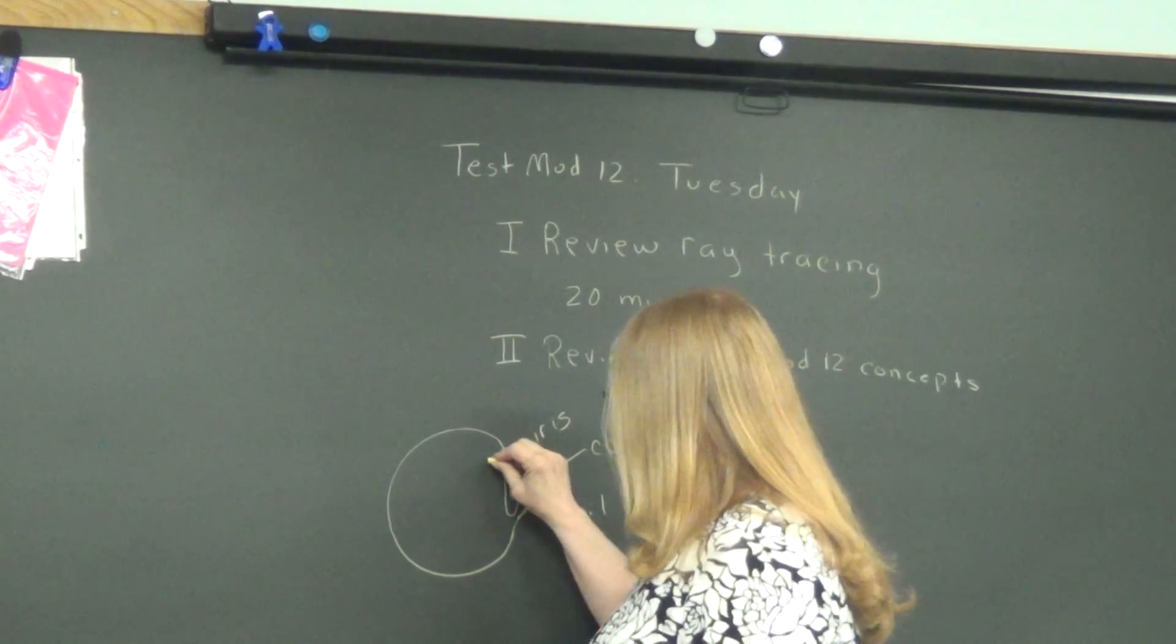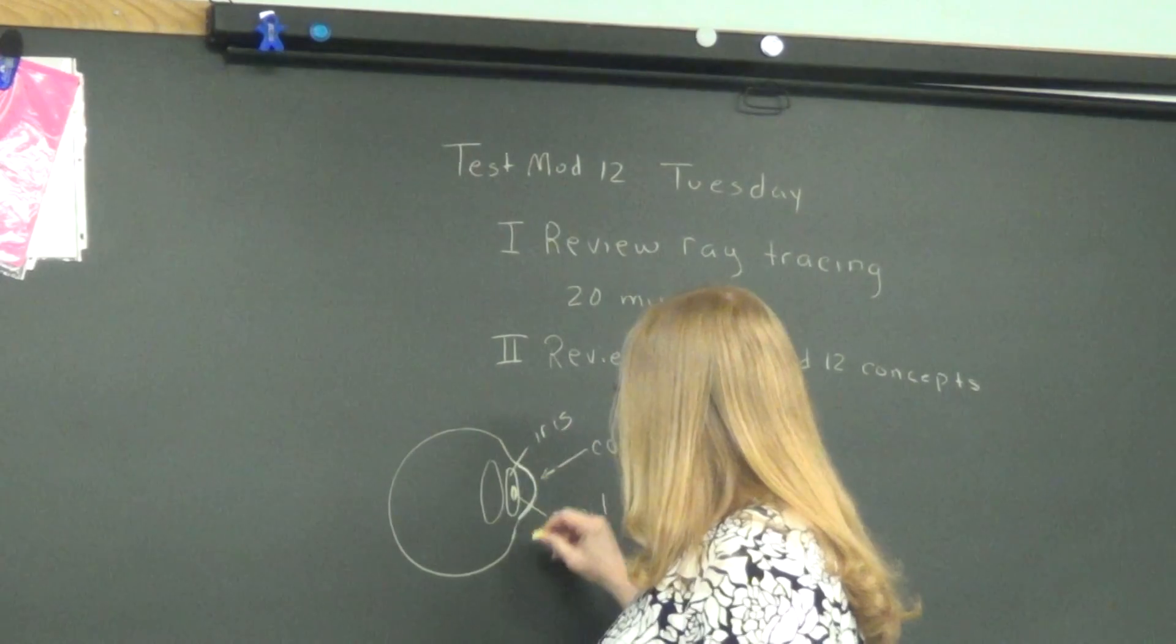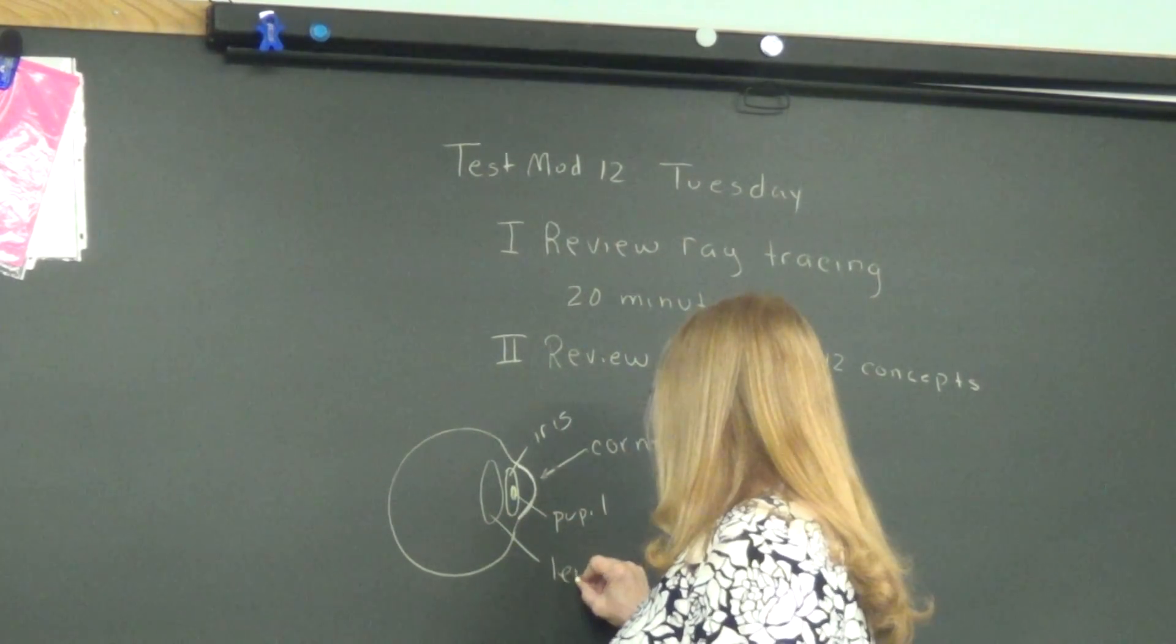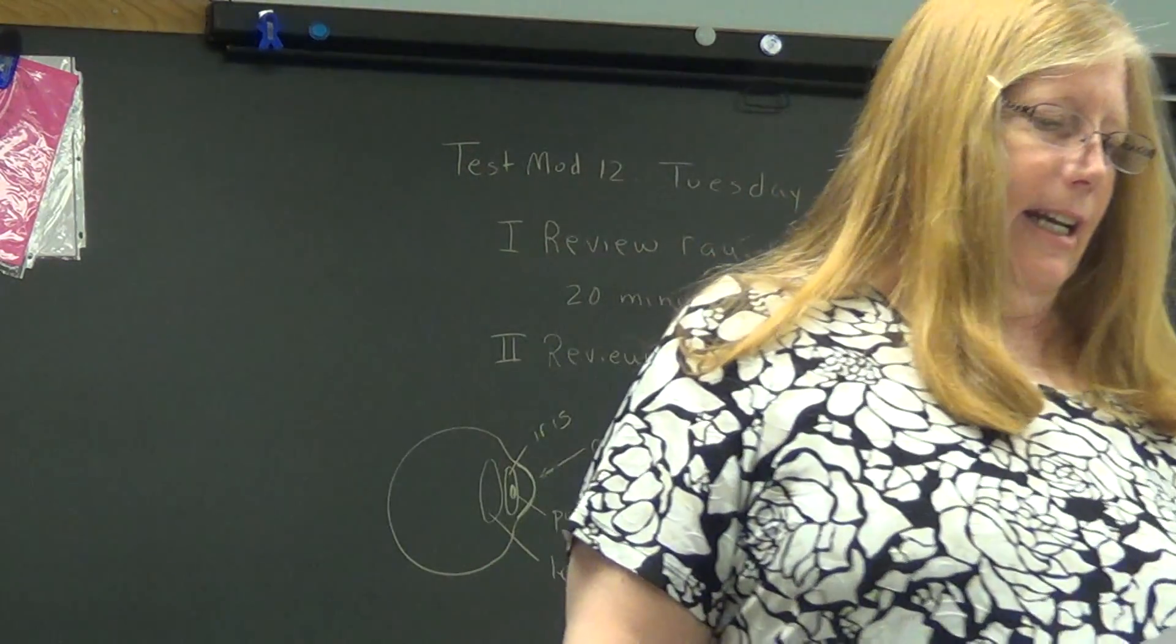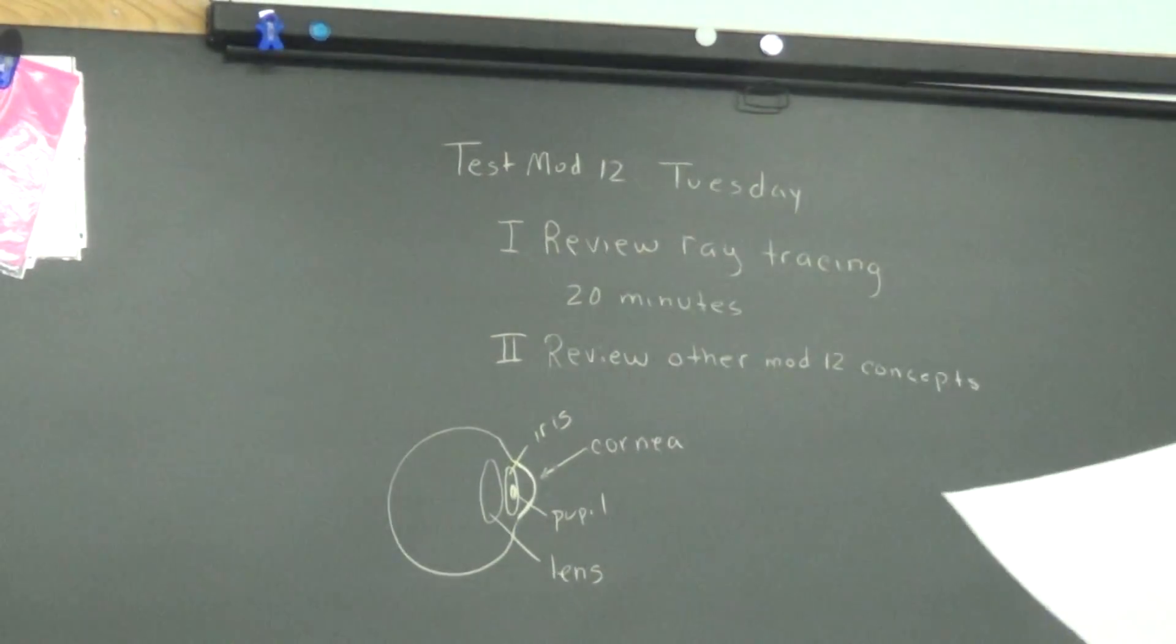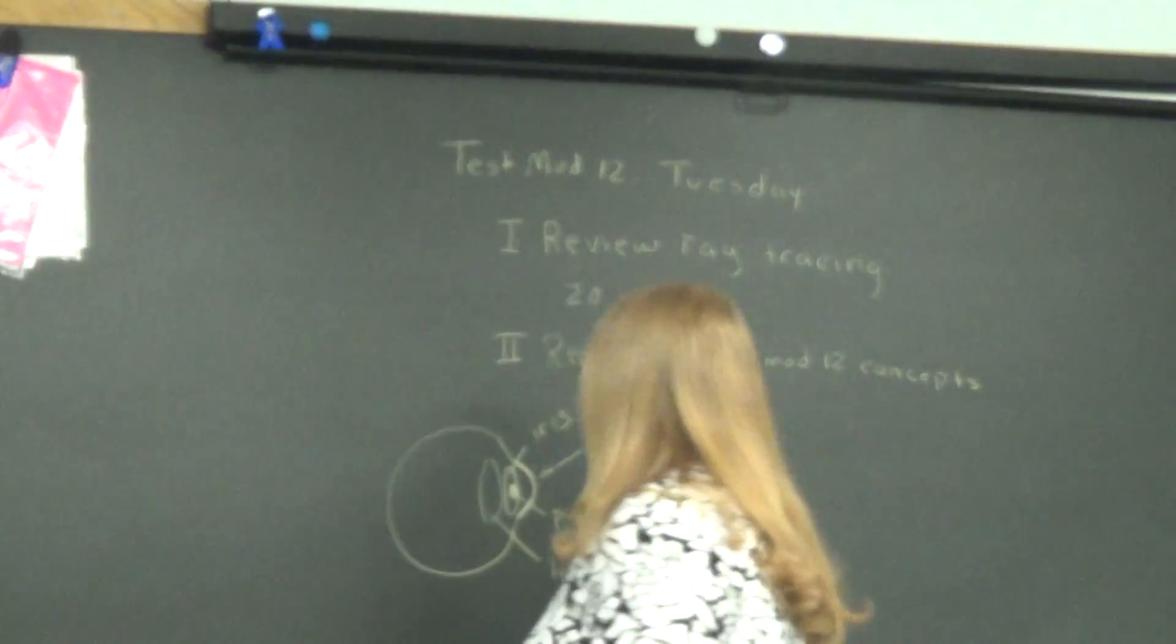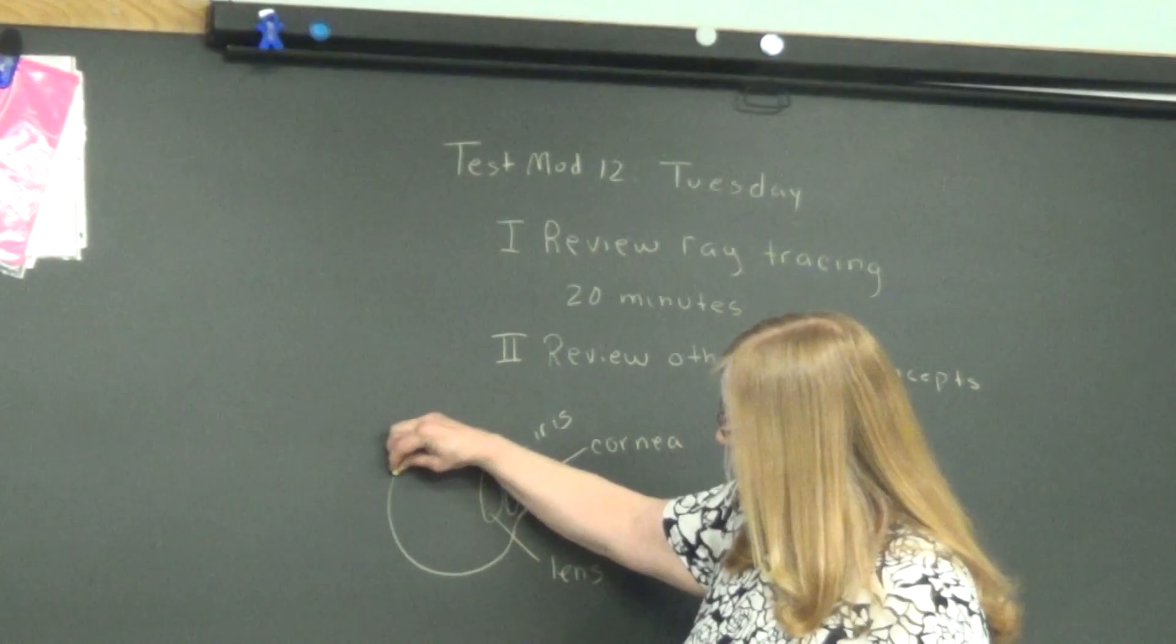So then comes the lens. The lens is why this appears in this lesson, because it has a lens. I keep drawing an eye. It's annoying. If we want, there's a retina back here where the image forms.